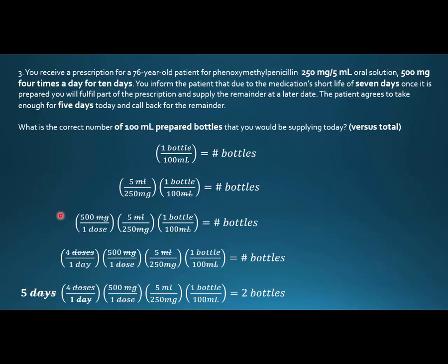What is the correct number of 100 ml prepared bottles that you would be supplying today? What I would note is 'today versus total.' I would calculate both to make sure I didn't get stuck in the trap, because that's what it is — it's asking which day value to use: is it the five, the seven, or the ten?